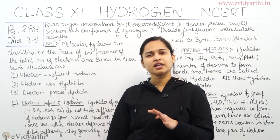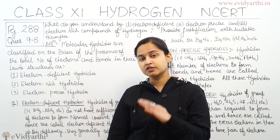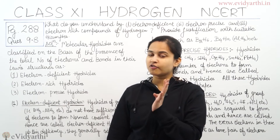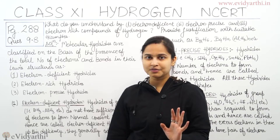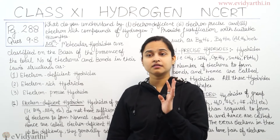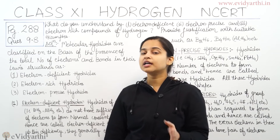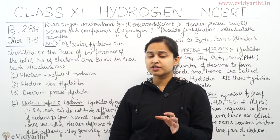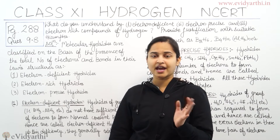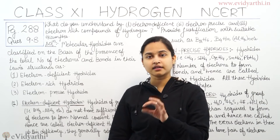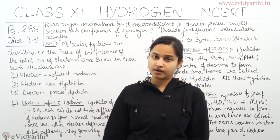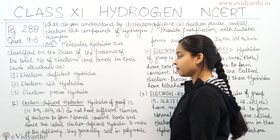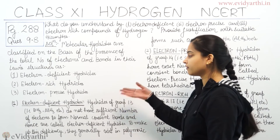These boron family hydrides exist in polymeric form only, because they are stable in that form and cannot form normal covalent bonds otherwise. So if we consider BH3 or AlH3, these hydrides don't exist in monomeric form. They exist in polymeric forms such as B2H6 (diborane), (AlH3)n, and B4H10. Electron deficient hydrides of Group 13 — BH3, AlH3, etc. — do not have sufficient electrons to form normal covalent bonds; this is the deficiency.